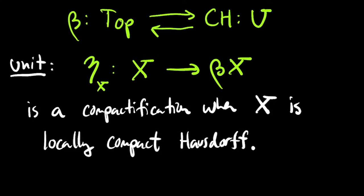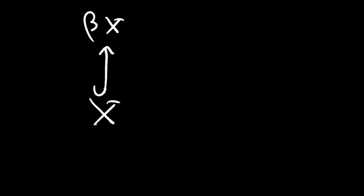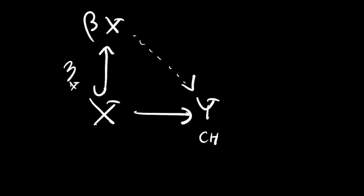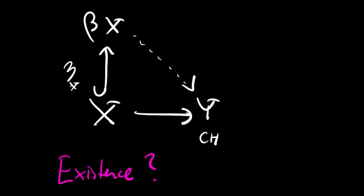As the unit of the adjunction, eta_X satisfies a universal property: for all compact Hausdorff spaces Y and all maps from X to Y, there exists a unique extension to the Stone-Čech compactification of X. This discussion tells you what the Stone-Čech compactification is, what's important about it, and gives you its universal property — but it doesn't prove that it exists.